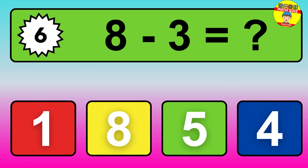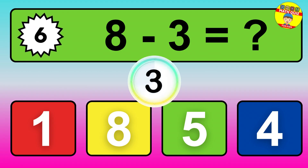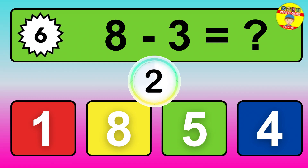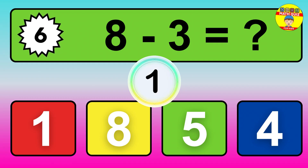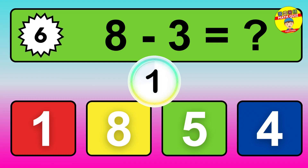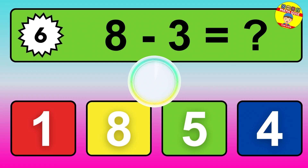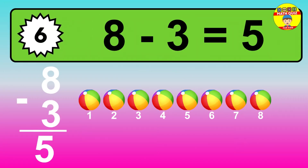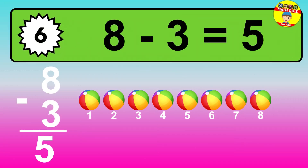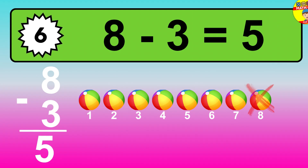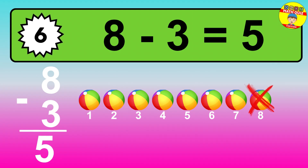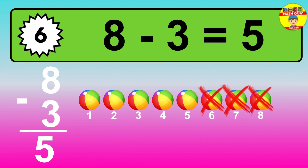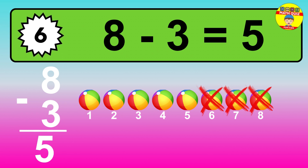Question 6: 8 minus 3 equals what? The answer is: 8 minus 3 is 5. Let's count it: 1, 2, 3, 4, 5.